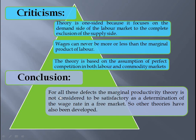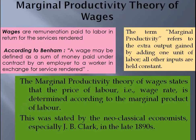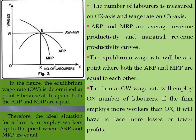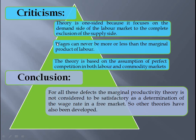The other theories have been developed to find out what best wages can be paid to laborers. To recap: in marginal productivity theory, we learned the meaning of wages, the meaning of marginal productivity, and the theory statement. We covered six assumptions, then the diagram with OX and OY axes and the equilibrium wage rate. Finally, we covered three major criticisms and concluded that the theory is not satisfactory, with other theories being developed to determine better wage rates for employees.